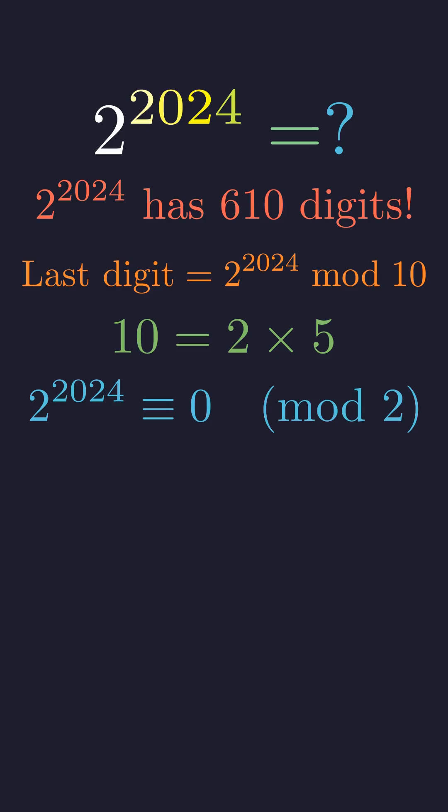2 to any positive power is even, so modulo 2, our answer is 0. That was easy enough.